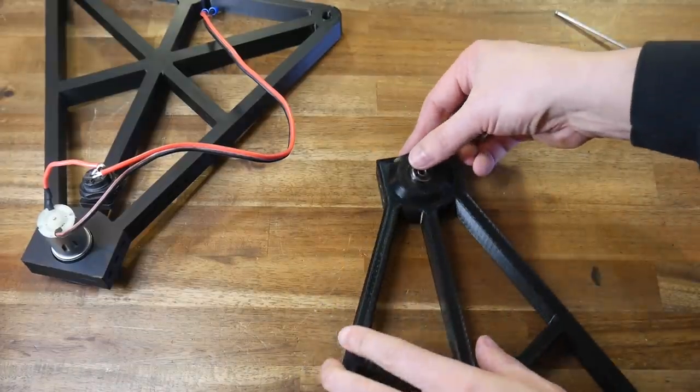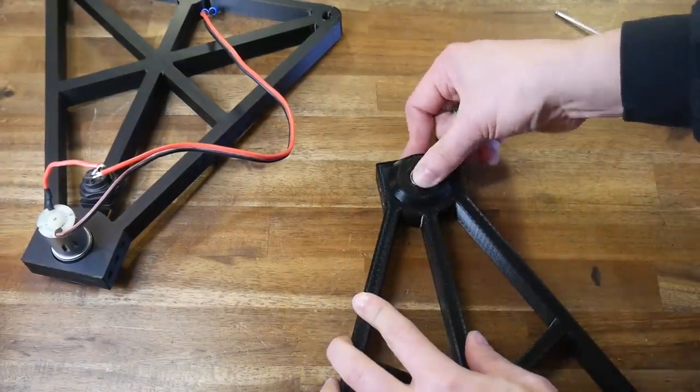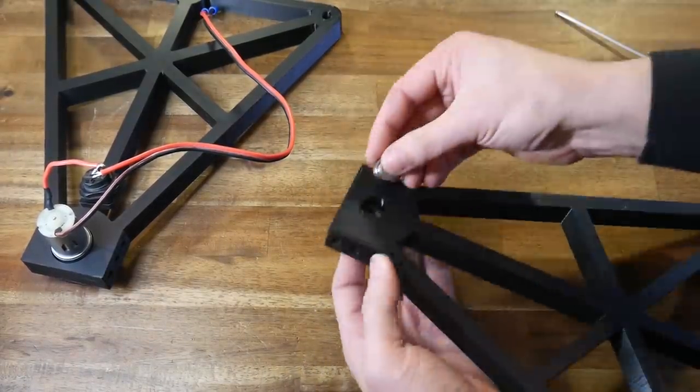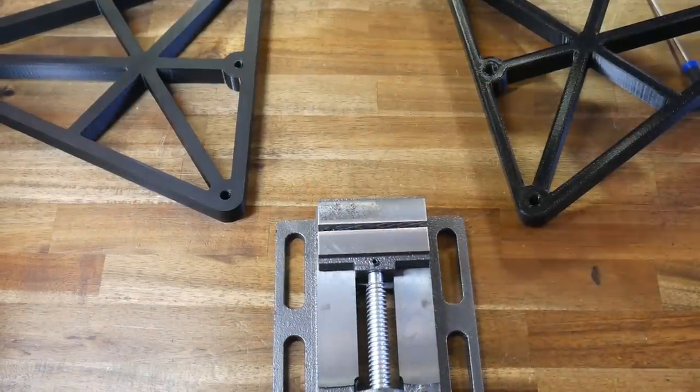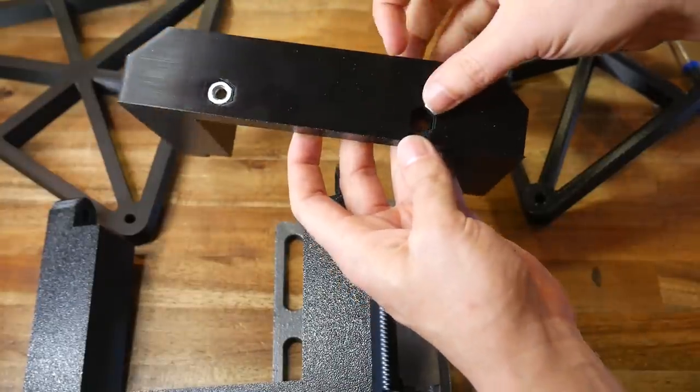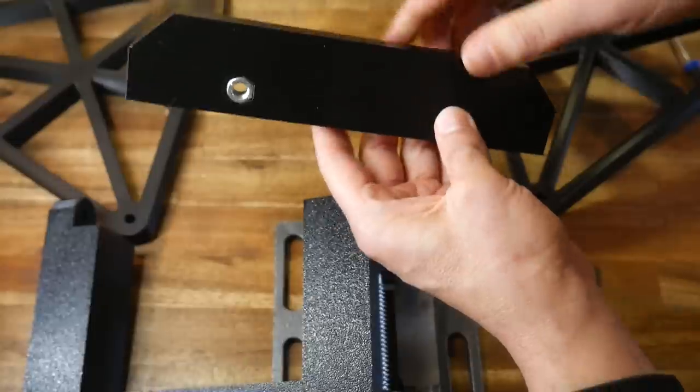Next, we're going to build the base of the frame, including attaching our vise. The three legs are identical, and for two of them, you need to press in a pair of M8 nuts. Then position the vise on top of these two sets of legs, so the two chamfered surfaces in the corners are facing each other as shown.